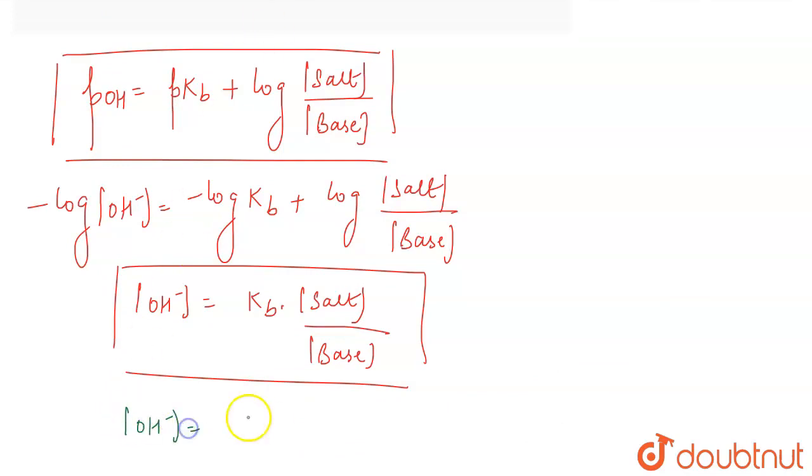Now, what is the value of Kb given to you? 2 into 10 power minus 5. Concentration of salt is 0.2 molar, which is NH4Cl and base is 0.2 molar. This will get cancelled out.